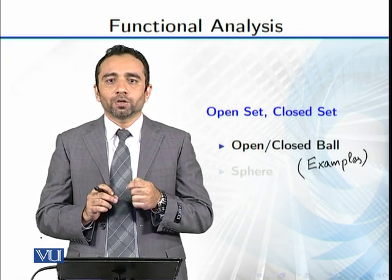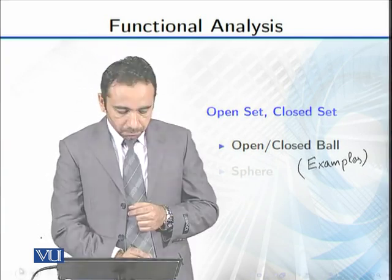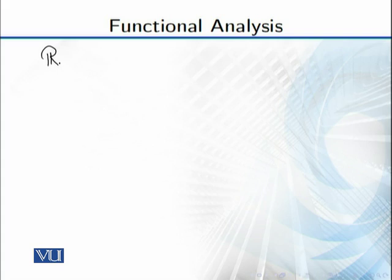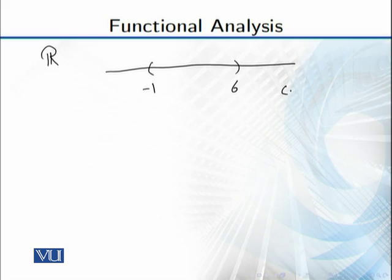Now let's do some examples of open ball. I will take two types of examples: one, we take the real line, and the other one we take R-square, because it is easy to understand. In R, let's say I have made an interval. This interval is between minus 1 to 6. As you see, it has an open interval.